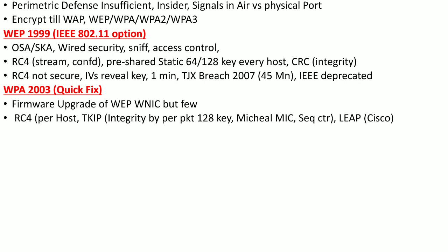WPA also uses RC4, but this time it uses a per-host key — meaning the key is different for every host. It also uses the Temporal Key Integrity Protocol (TKIP) for integrity checking on a per-packet basis using a 128-bit key. TKIP also uses a Message Integrity Code called Michael, and a sequence counter to defend against sniffing and man-in-the-middle attacks.